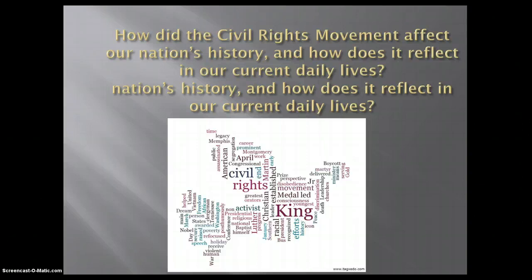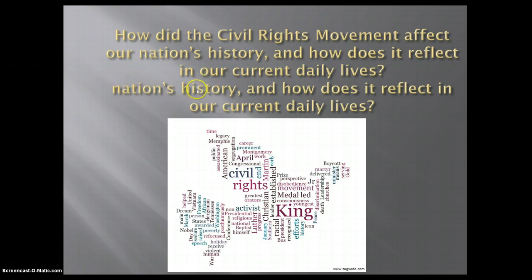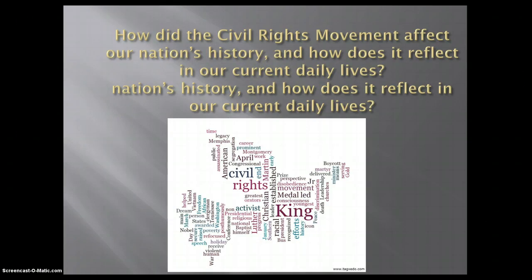These are some research questions students formulate themselves, but here is one of the main research questions I give them, and it's an objective for the project: How did the civil rights movement in the U.S. affect our nation's history, and how does it reflect in our current daily lives? What are some patterns we've seen during the civil rights movement, and how have they recurred in history? Because there's still racism, still prejudice, still those issues. What gains have been made, and what can we still learn from it? Because if we are not aware of history, we are doomed to repeat it.